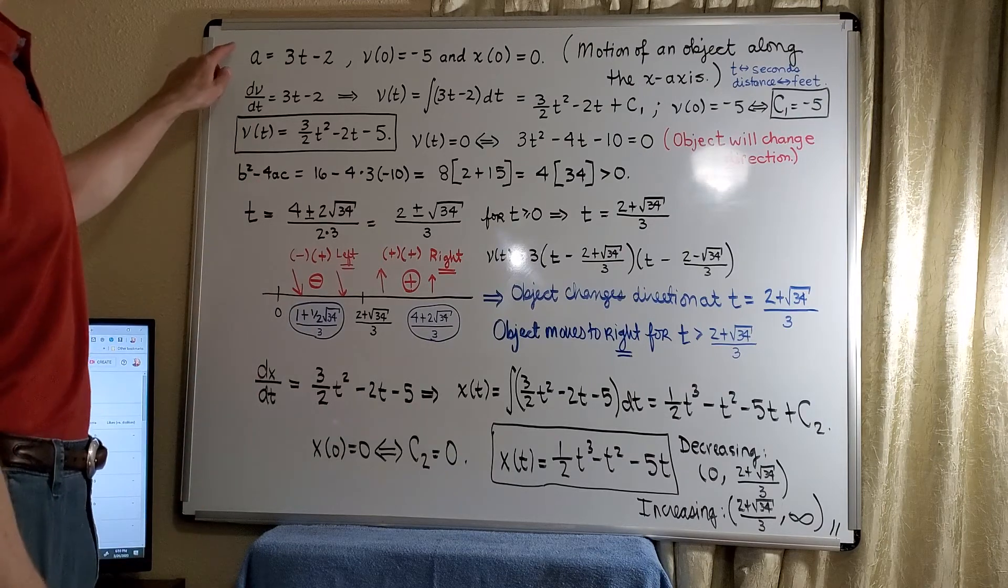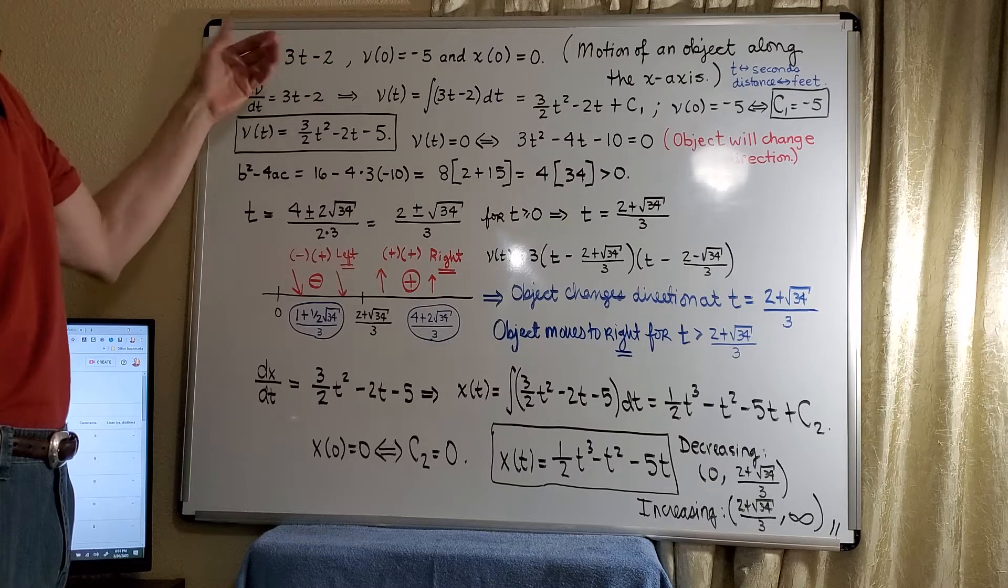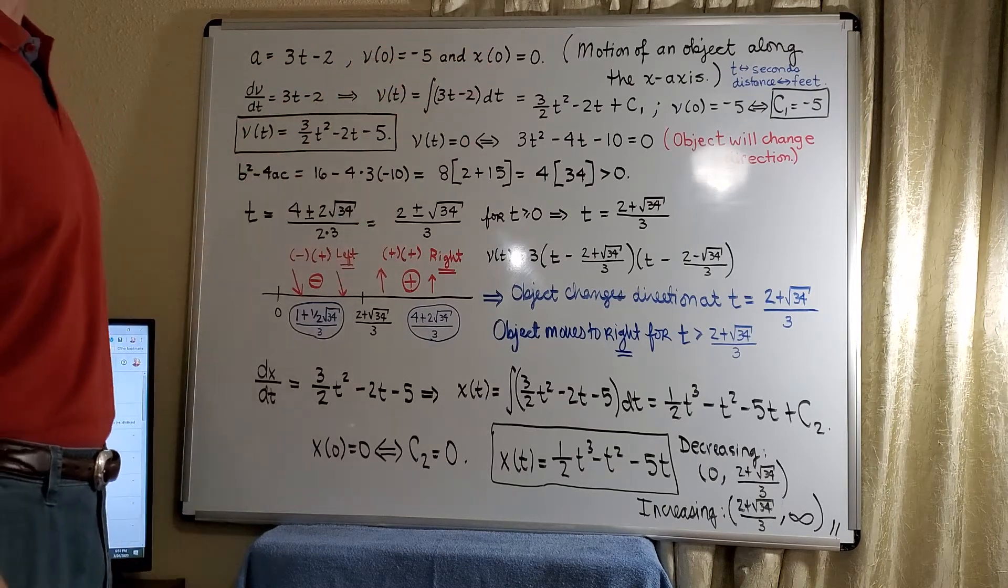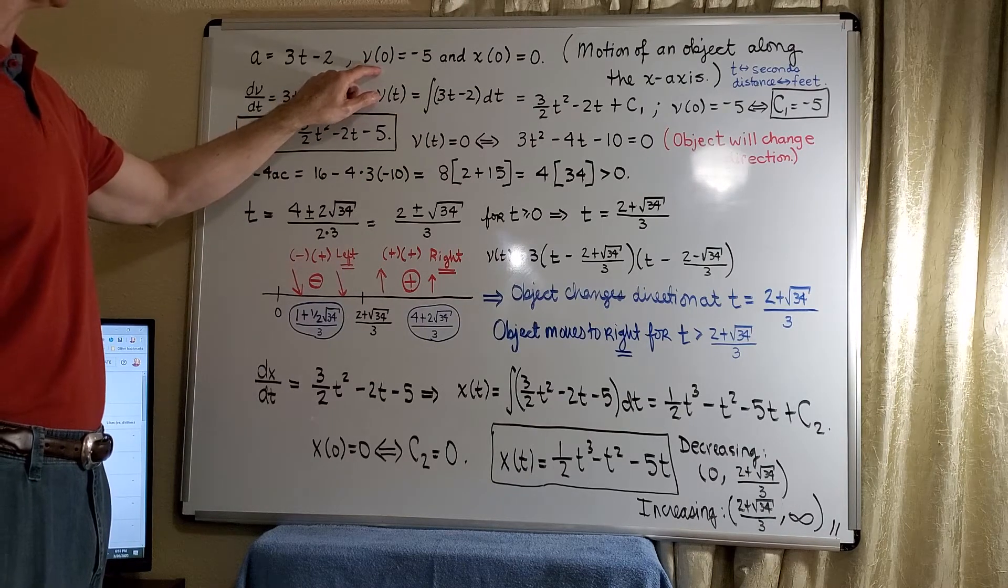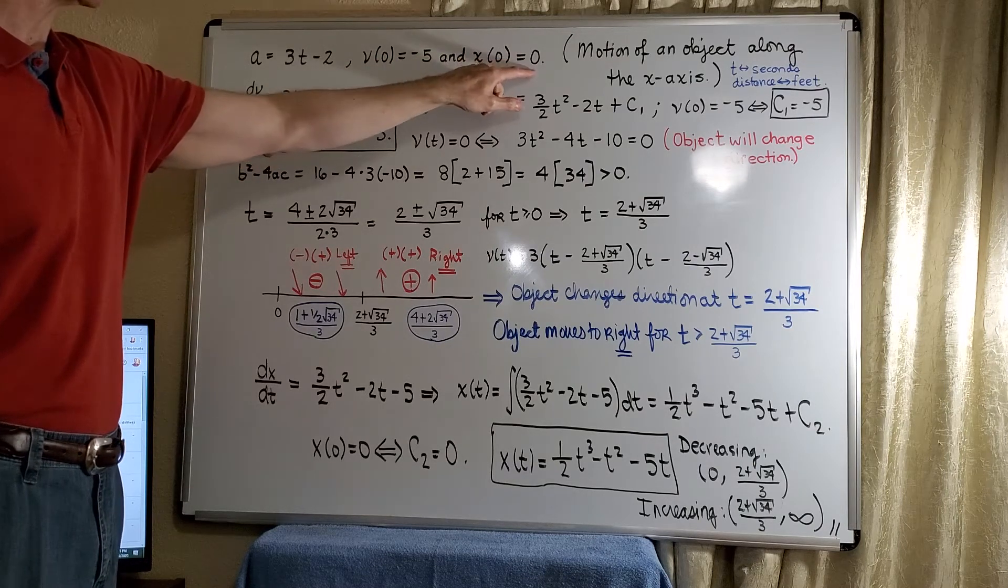It has an acceleration of a equals 3t minus 2, where t is the time in seconds. Our distance will be measured in feet. The velocity at time 0 is negative 5, and the position at time 0 is 0.